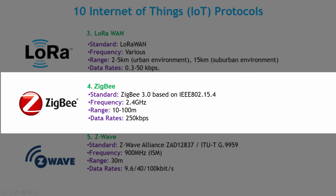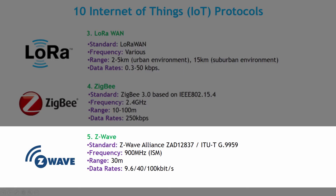ZigBee, or RF4CE, has significant advantages in complex systems — offering low power operation, high security, robustness, and high scalability with high node counts, as well as the ability to take advantage of wireless control and sensor networks in machine-to-machine and IoT applications. Z-Wave is a low-power RF communication technology that is primarily designed for home automation for products such as lamp controllers and sensors, among many others.